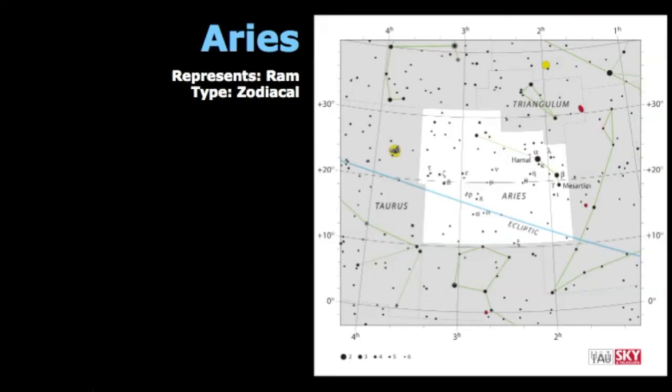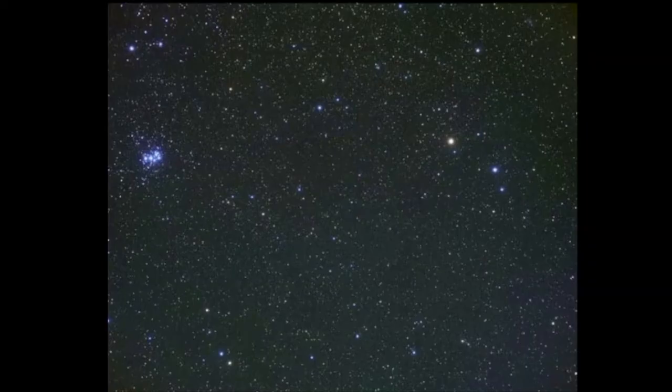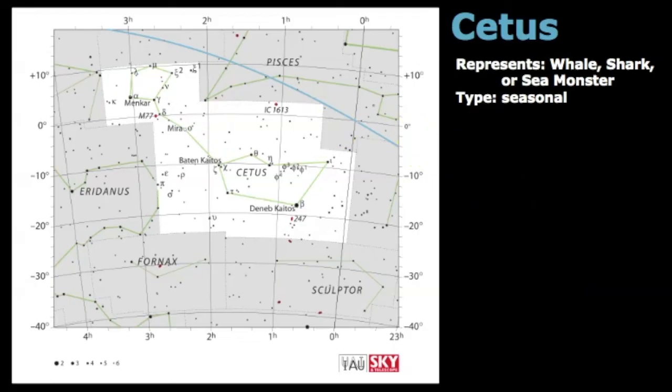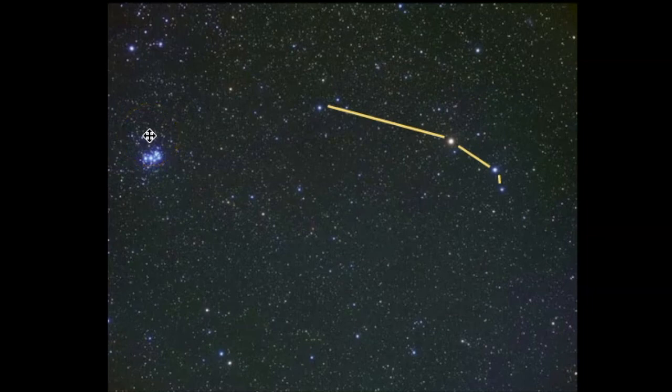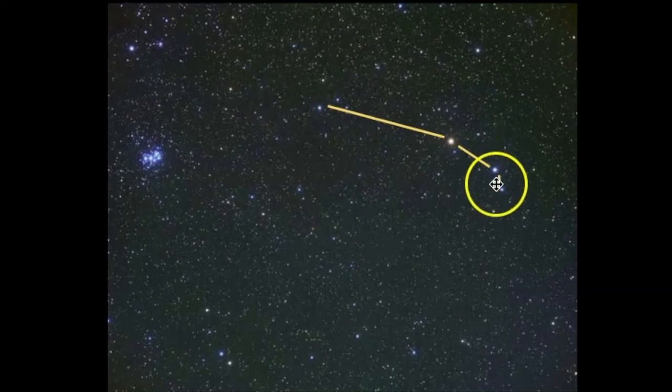If we move on to Aries, this represents a ram, and the ecliptic, or the path of the sun, passes through it. So it's classified as a zodiacal constellation. For me, I always try to find Aries by using this star cluster known as the Pleiades, and Aries in a way kind of points to that. It kind of points towards the Pleiades. So this is the thing that my eye is drawn to right away in the sky when the Pleiades are out, and from there I look for this constellation of Aries.